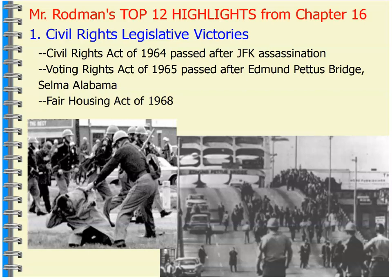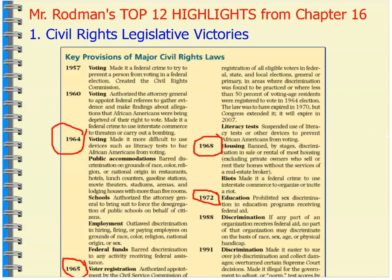There were some holes they needed to fix. They did that with the Voting Rights Act of 1965, after what they saw on Bloody Sunday at the Edmund Pettus Bridge. The trifecta of civil rights victories is really these three bills, ending with the 1968 Fair Housing Act, basically outlawing discrimination in housing as a result of race, national origin, or ethnicity.